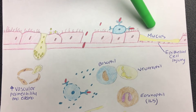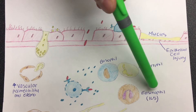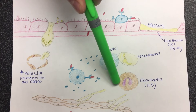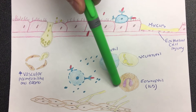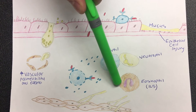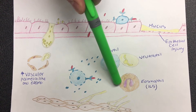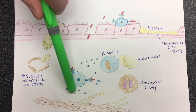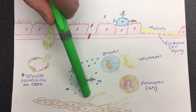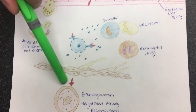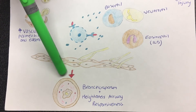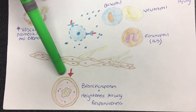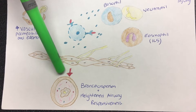Interleukin 5 stimulates eosinophils, a type of white blood cell that assists in the inflammation process, which causes damage to the lung tissue. However, when a person is continuously exposed to an allergen, remodeling — which is the irreversible narrowing of these airways — and fibrosis, which is the formation of scar tissue in the airways permanently affecting airflow, occur. This damage limits the movement of air.